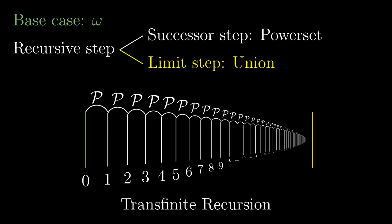So in our case, the successor step is taking the power set and the limit step is the union of all previous values. But the key question here is, what is the thing that transfinite recursion lives on?